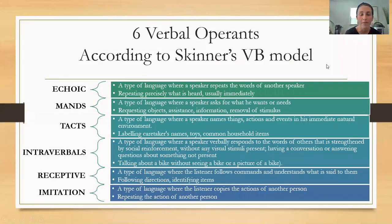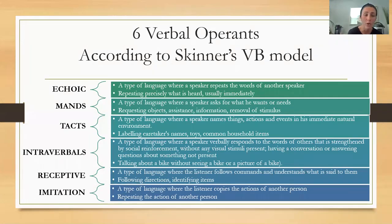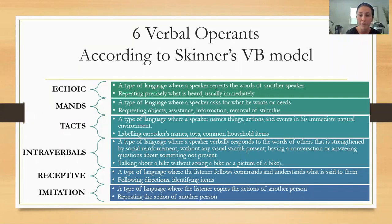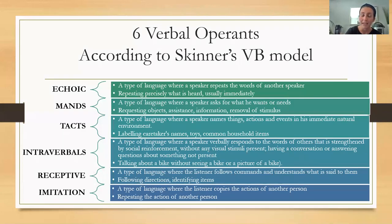Now we're getting into the verbal operants according to Skinner's VB model. Skinner breaks down language into various types and categories. The first category is an echoic — a type of language where a speaker repeats the words of another speaker, precisely echoing what is heard, usually immediately. For example, if I say 'mommy,' my expectation is that the child says 'mommy.' If I say 'daddy,' my expectation is that the child imitates vocally the same word — 'daddy.' That is considered an echoic. Echoics are really important because they are the foundation of imitating and being able to vocally express oneself.